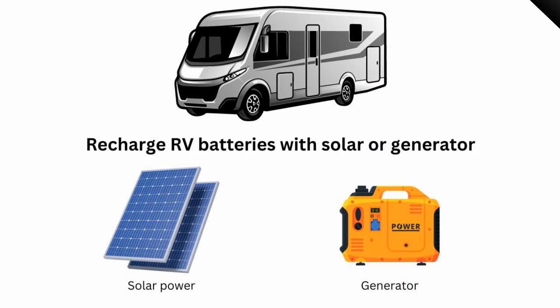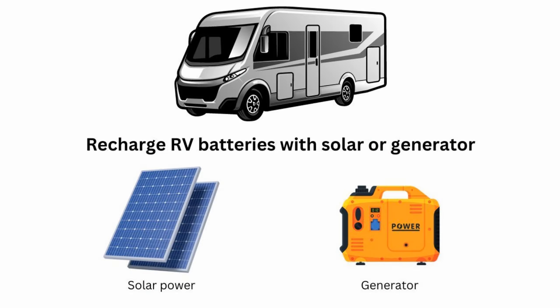What happens when your battery is all depleted and the battery power is gone? Well, this is a situation that boondockers face on a regular basis, and they have two main choices. Number one, boondockers can use solar power — solar panels that take power from the sun and transfer it into the batteries, so they don't have to break camp and go plug into shore power somewhere. They can stay right where they are and recharge their batteries. Another solution is to use a generator, either a portable one or one that's built into your RV, and that will recharge your battery as well.